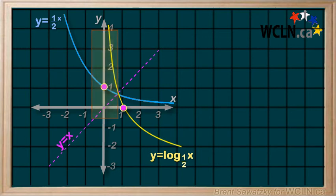Again, we can see that regular reflection traits apply. That is, each point in the original gets reflected straight across the y equals x line and ends up the same distance but on the other side of the line. And this is our corresponding log graph.